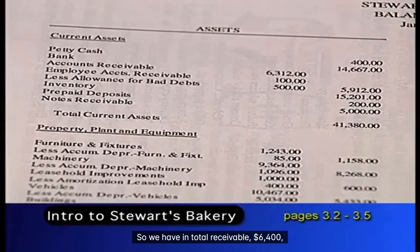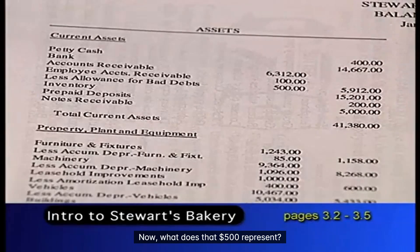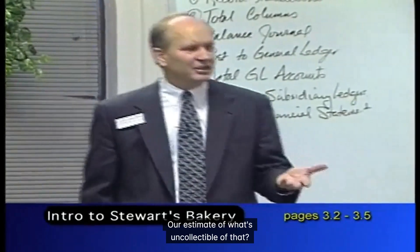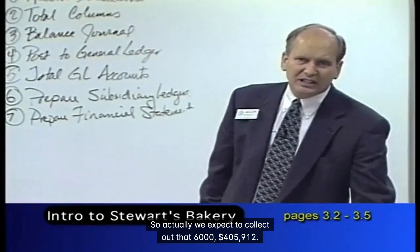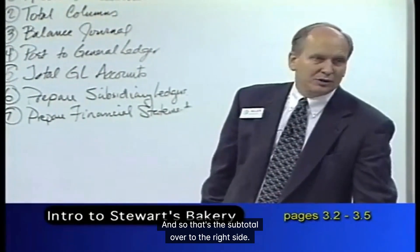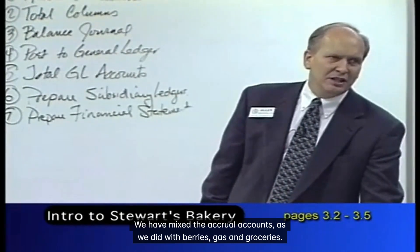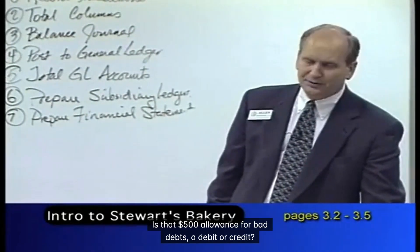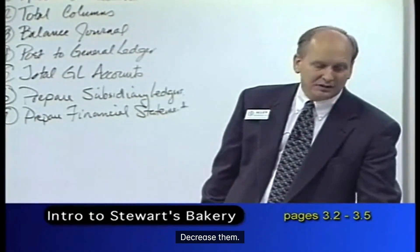So we have total receivables of $6,400, but we have a $500 allowance for bad debts. That $500 represents our estimate of what's uncollectible of that $6,400. So we actually expect to collect $5,912, and that's the subtotal shown on the right side — it shows what we actually think we're going to collect. That $500 allowance for bad debts is a credit balance, and credits decrease assets.